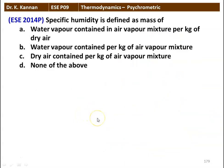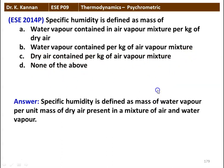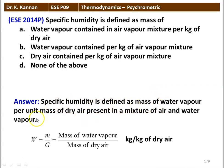Next question: specific humidity is defined as the mass of water vapor contained in an air-vapor mixture per kg of dry air. The correct definition is: specific humidity W = M/G, where M is the mass of water vapor and G is the mass of dry air, giving units of kilogram per kilogram of dry air. The correct answer is option A.